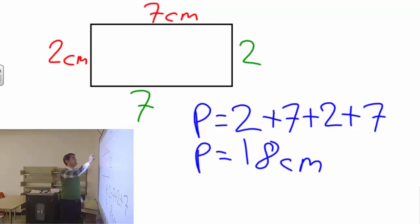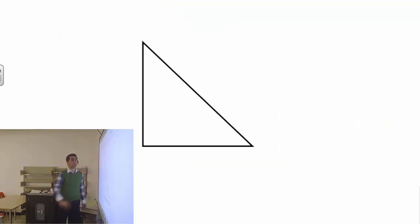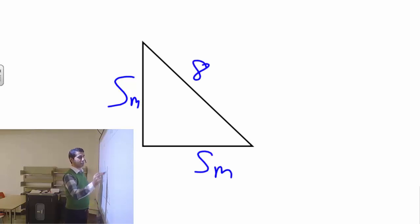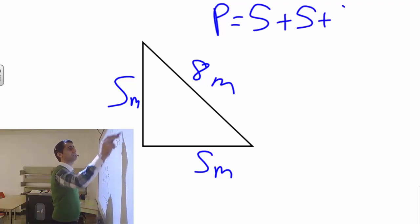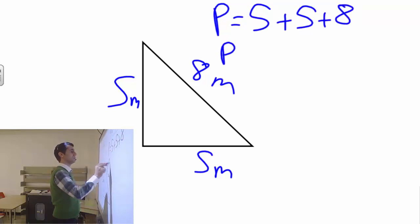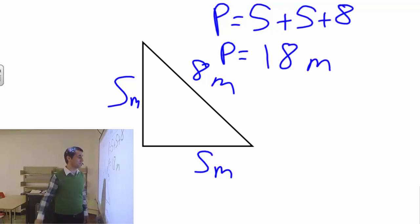Here is another quick example. This is a triangle, so they have to give you the values. Let's say this is 5 meters, this is also 5 meters, and 8 meters. What is the perimeter of this? Perimeter equals 5 plus 5 plus 8, which is, by coincidence, 18 meters.